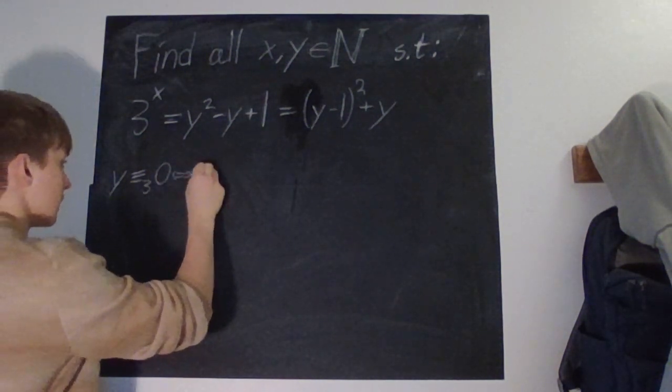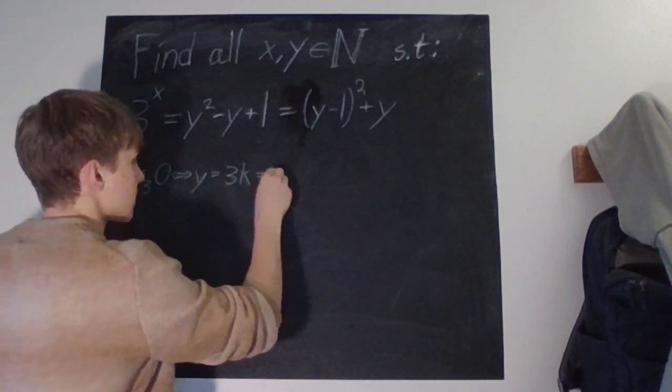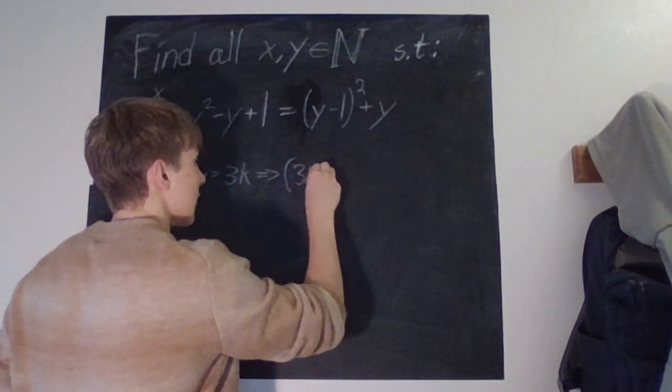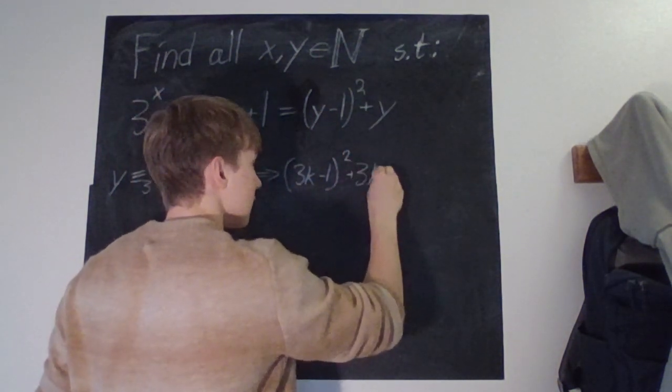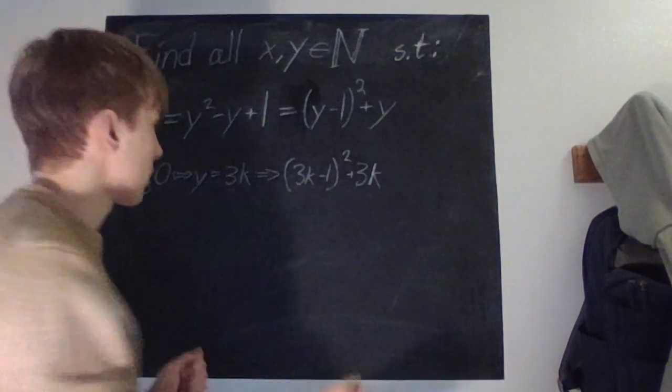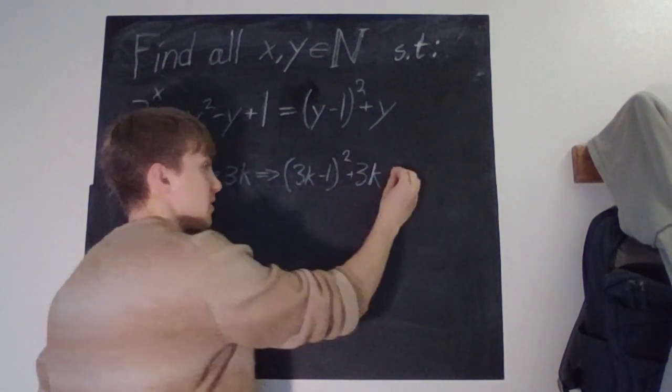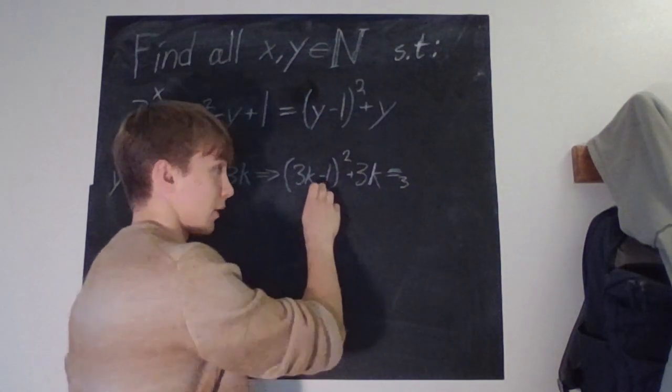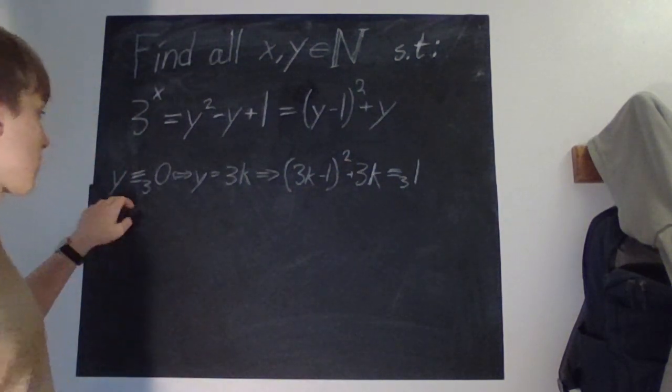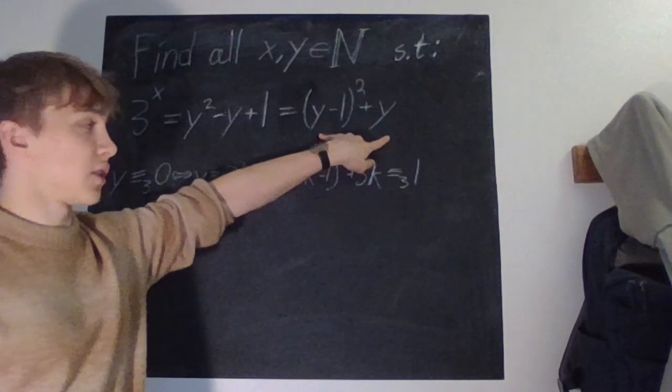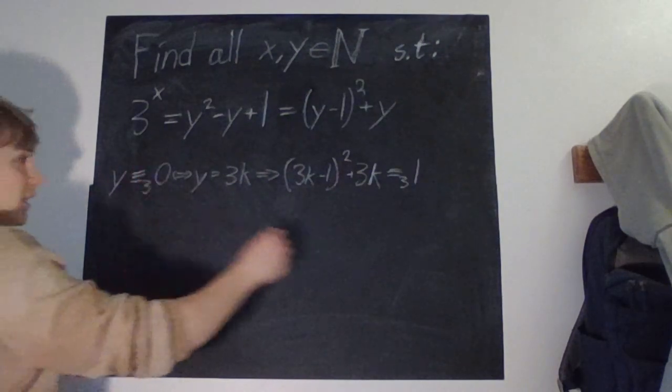Which is equivalent to y being equal to 3 times some k, which gives us 3k minus 1 squared plus 3k. When we complete the square, we get something times 3 here, and then the only thing that doesn't have a 3 in front is the plus 1. So when y is divisible by 3, we know that this expression is not divisible by 3. It has the remainder of 1, and therefore this does not work.